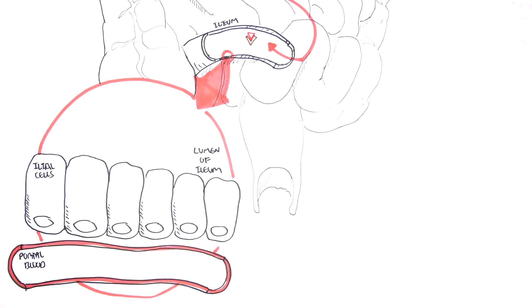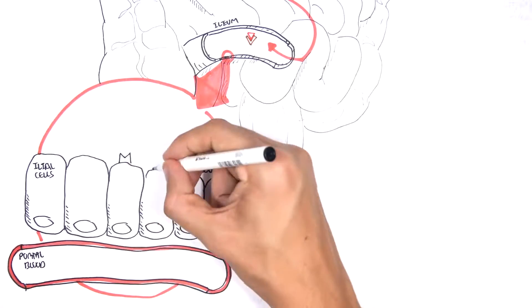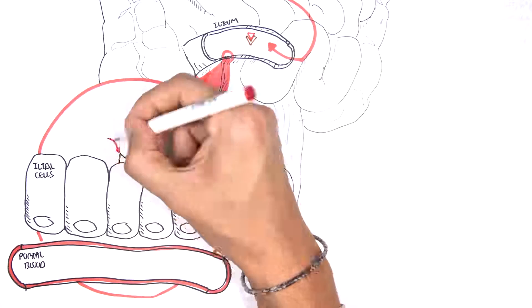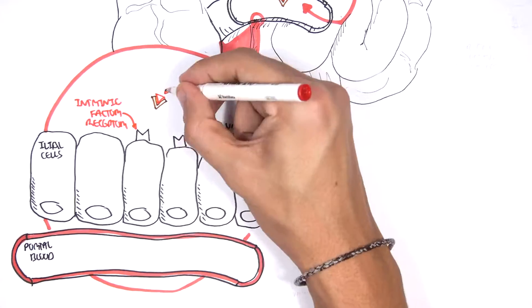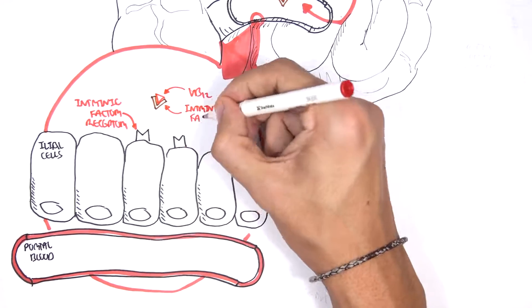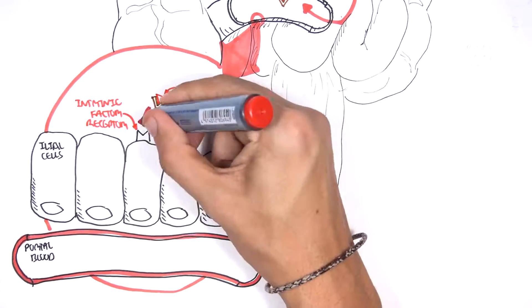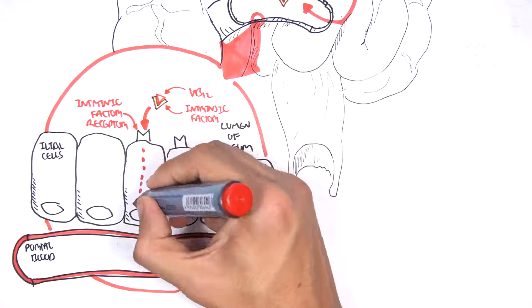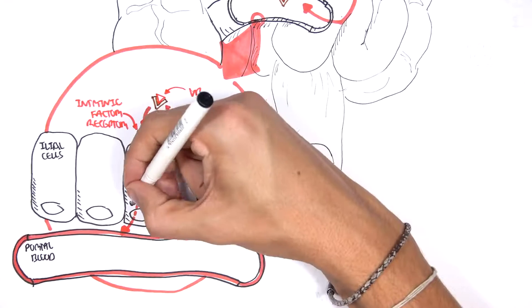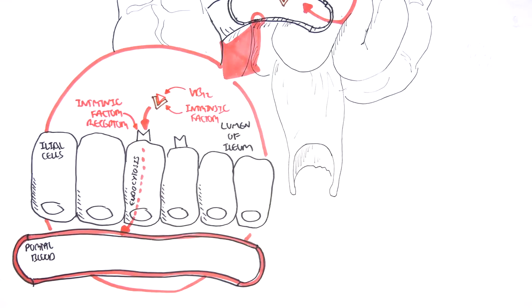It's on the apical surface of these cells where we find intrinsic factor receptors. So when the intrinsic factor carrying the vitamin B12 comes along, it will bind onto the intrinsic factor receptor, and then this whole thing will get endocytosed. So when the vitamin B12 is absorbed, it will be released into the plasma.